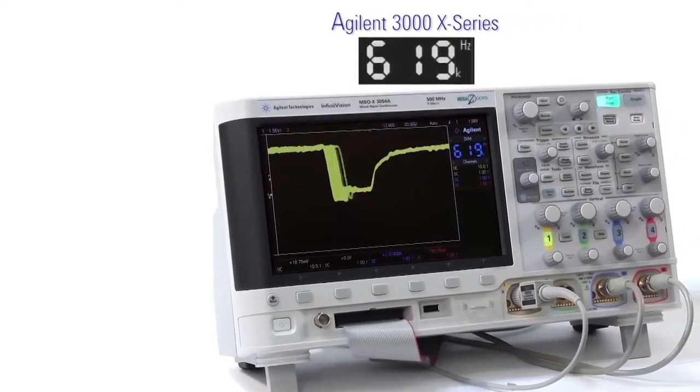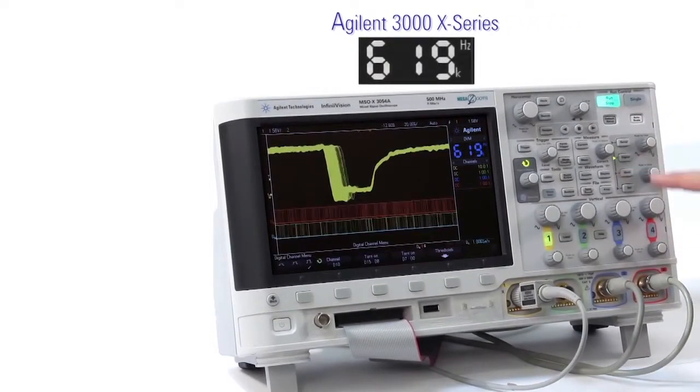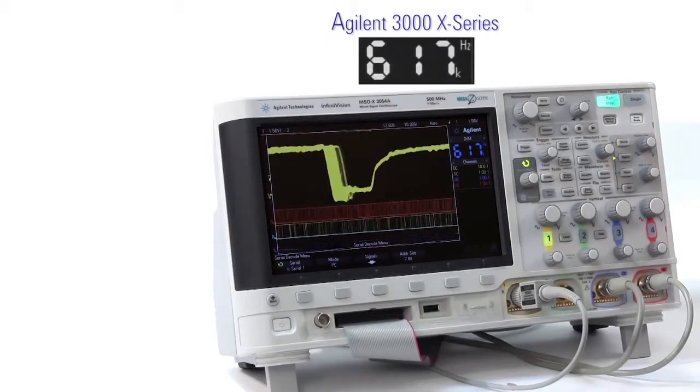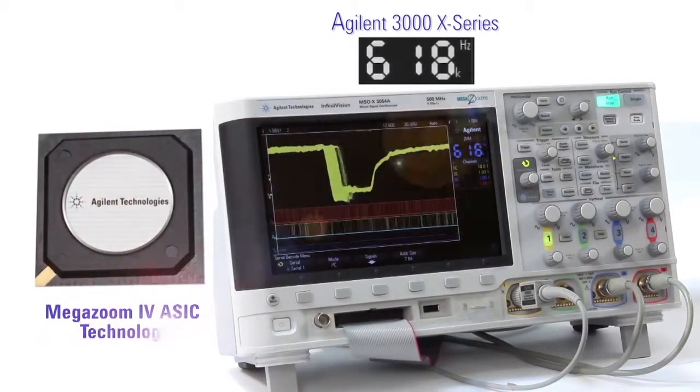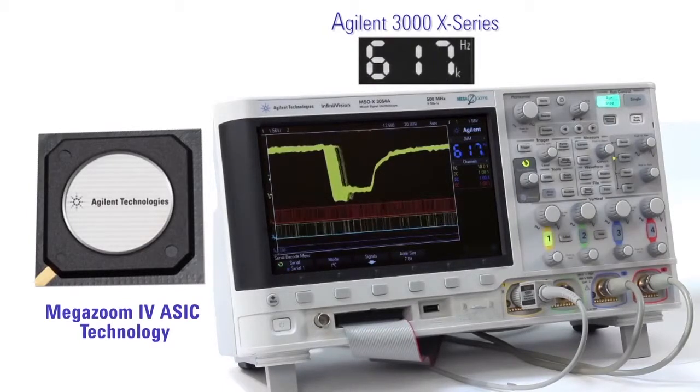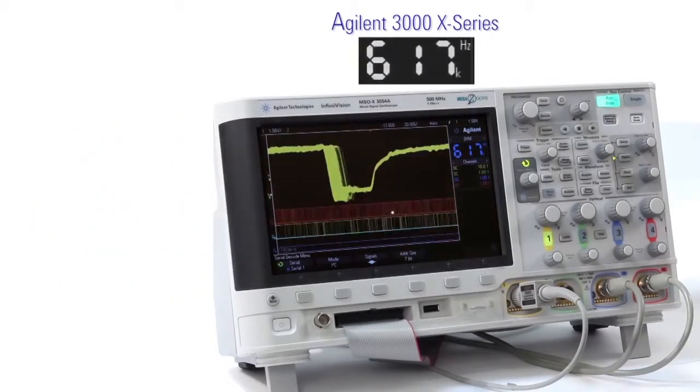As you enable digital channels and serial decode on the Agilent scope, its update rate is not greatly affected. This is due to our patented MegaZoom 4 ASIC that does digital acquisition and serial decode in hardware.